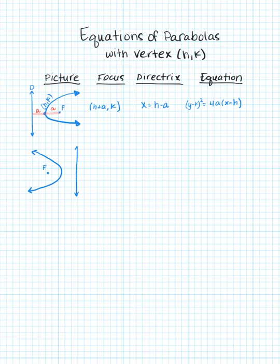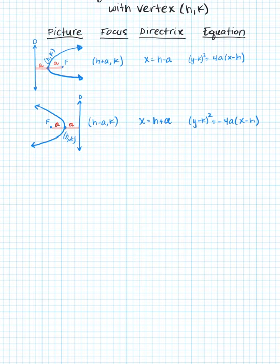Now if we flip the orientation of the parabola so that it opens left, again our vertex here is the point (h,k), and if we take a units away from h we get the focus at (h-a, k), and if we add a units away from h we get the directrix at x = h+a. The equation is almost the same as above, but now we have the negative sign in front of the 4.